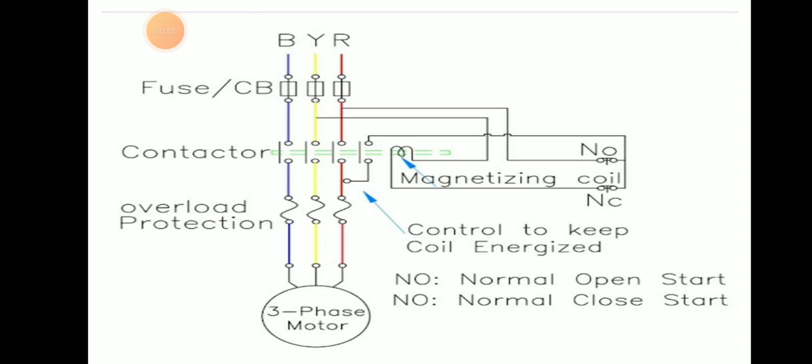There is a NO (normally open) contact for the magnetizing coil and NC (normally closed) contact for stopping. NO is normally open at start and closes during running. Overload protection is also provided. After the contactor, it goes to the three-phase motor, and there is a control circuit to keep the coil energized from the magnetizing coil.